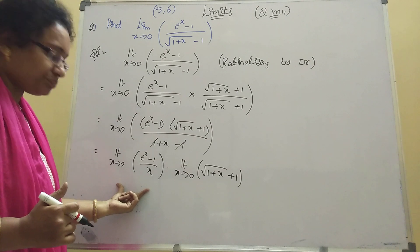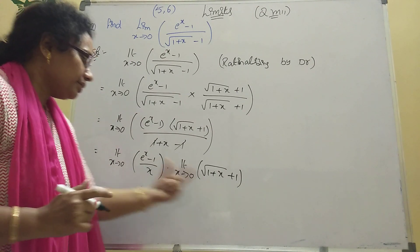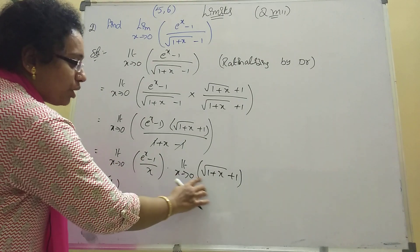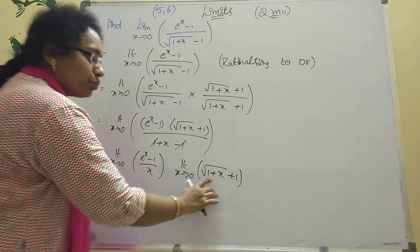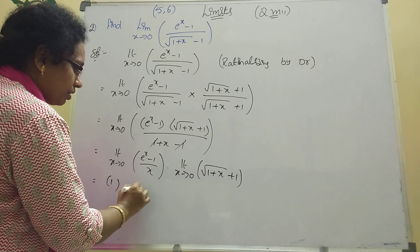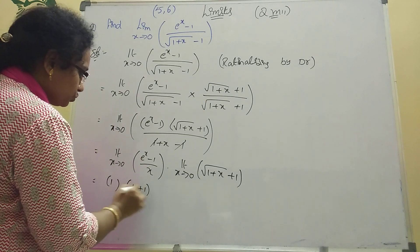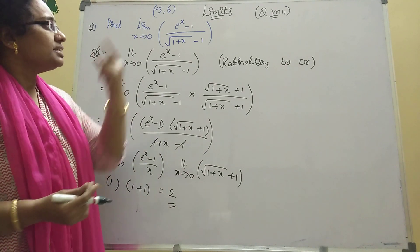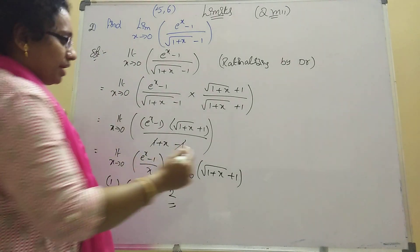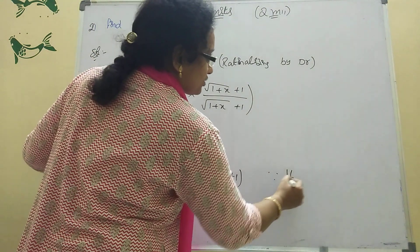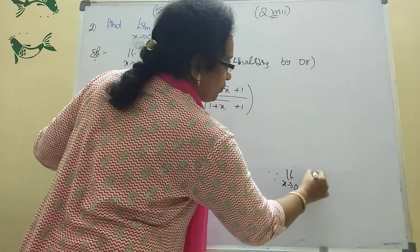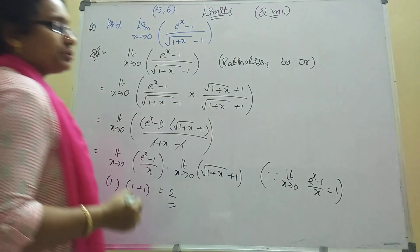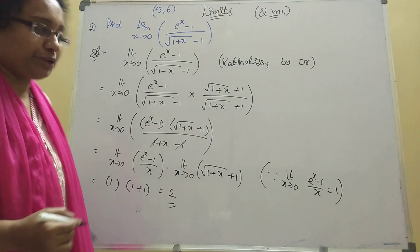Apply x tends to 0: limit e power x minus 1 by x equals 1 by formula. Then root(1 plus 0) plus 1 equals root 1 plus 1 equals 2. So answer is 1 into 2 equals 2. The formula used is: limit x tends to 0, e power x minus 1 by x equals 1. Using this formula you get the value easily.